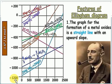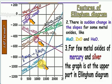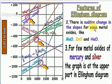In the Ellingham diagram, the more reactive a metal is, the more negative its ΔG value after forming its oxide. As temperature increases along the upward slope, the metal moves from more reactive to a less reactive metal oxide. A second feature is that there is a sudden change in slope for some metal oxides at a certain temperature — for example above 1300 Kelvins there is a sudden slope change.